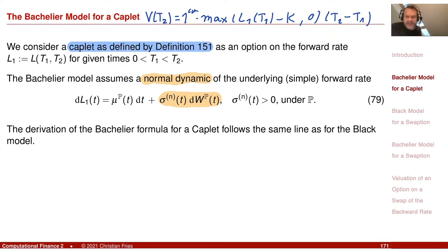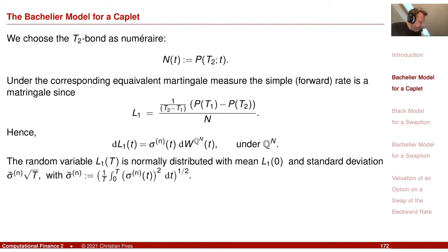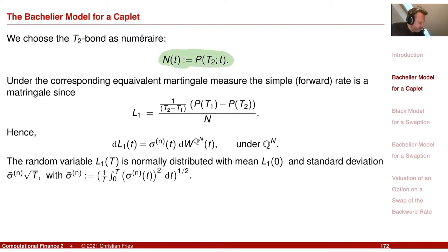Same task, just a different model. We proceed in the same steps. We observe that L is a martingale under the measure associated with a certain numeraire, and we choose here again the P(0,T2) bond as the numeraire. So then we just conclude that L1 is a martingale.